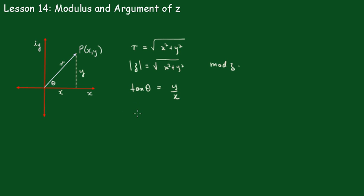So now we see that theta is equal to the inverse tan of y on x. And therefore, we can say that the argument of z is equal to tan inverse of y on x, which is the angle.